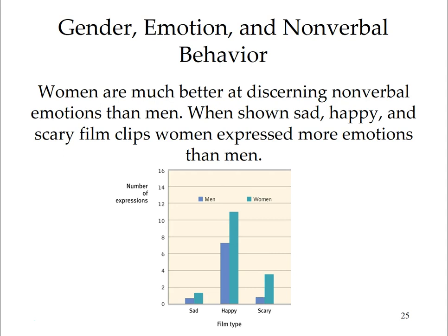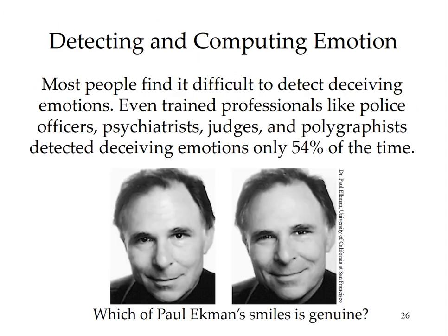All of us communicate nonverbally — a firm handshake immediately conveys an outgoing personality, and a gaze-averted glance or stare can communicate intimacy, submission, or dominance. Most people detect nonverbal cues and are especially sensitive to nonverbal threats. Research indicates that we read fear and anger mostly in the eyes, and happiness from the mouth. Introverts are better emotion detectors than extroverts. Women are much better at discerning nonverbal emotions than men — when shown sad, happy, or scary film clips, women express more emotions. Even trained professionals like police officers, psychiatrists, and judges detect deceptive emotions only about 54% of the time.